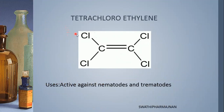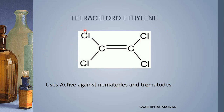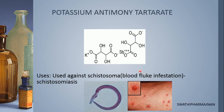The miscellaneous category of anti-helminthic drugs includes tetrachloroethylene. Tetra indicates four — four chlorine groups are attached to ethylene (Cl₂C=CCl₂). Tetrachloroethylene is active against both nematode infestations and trematode infestations.